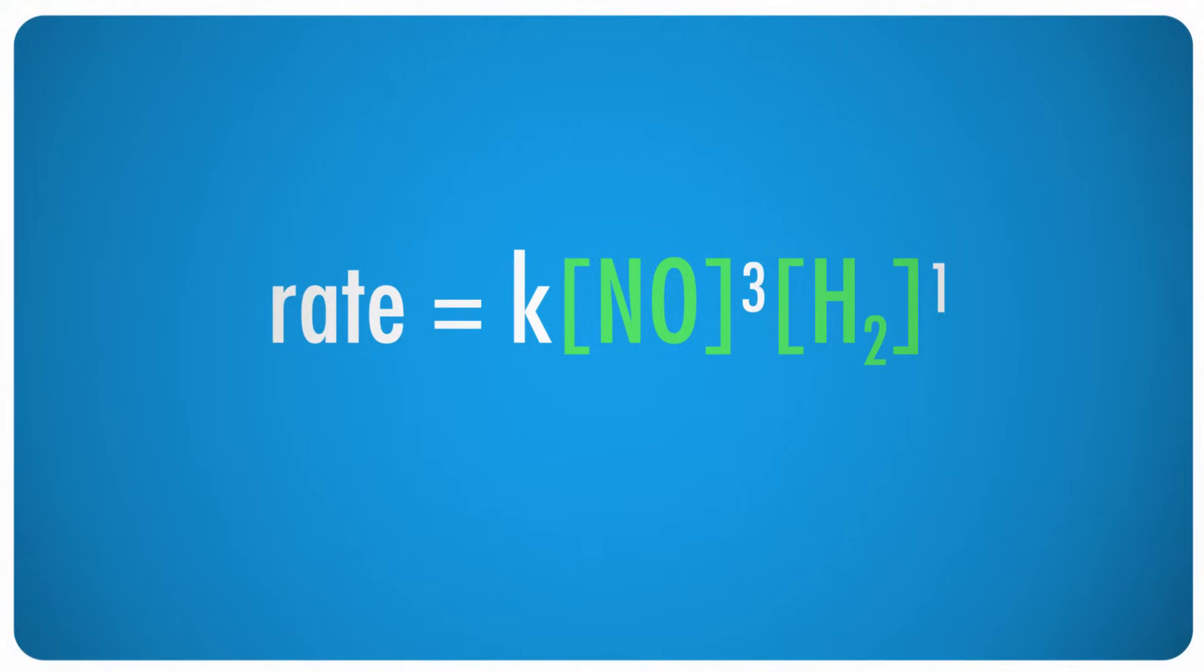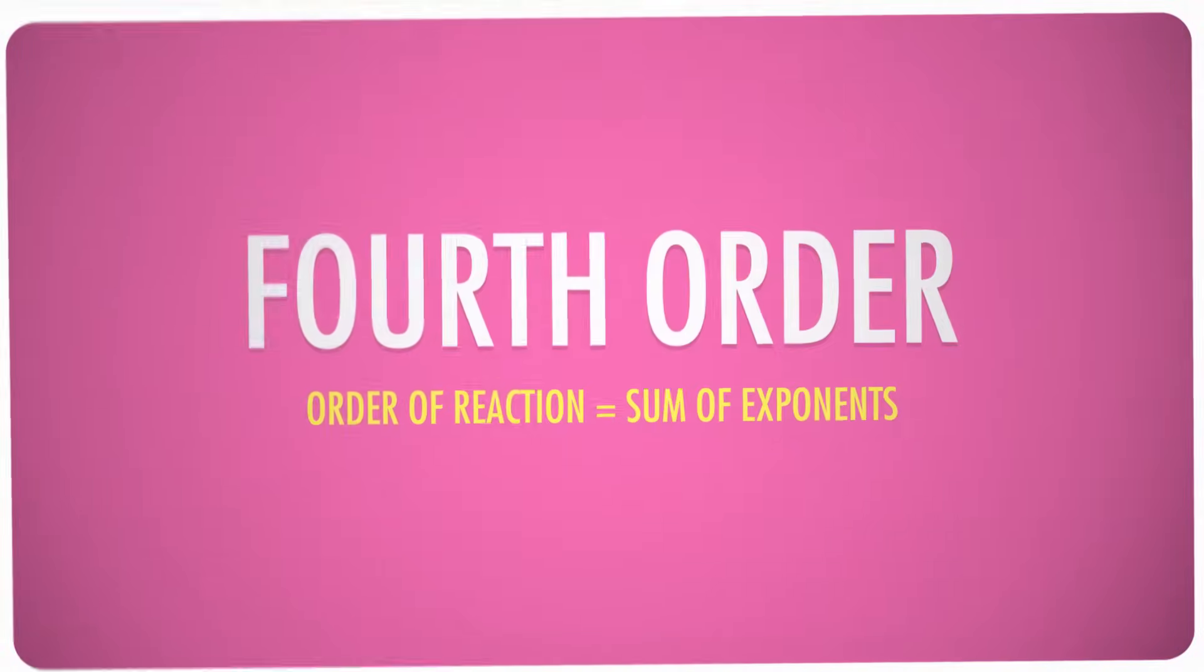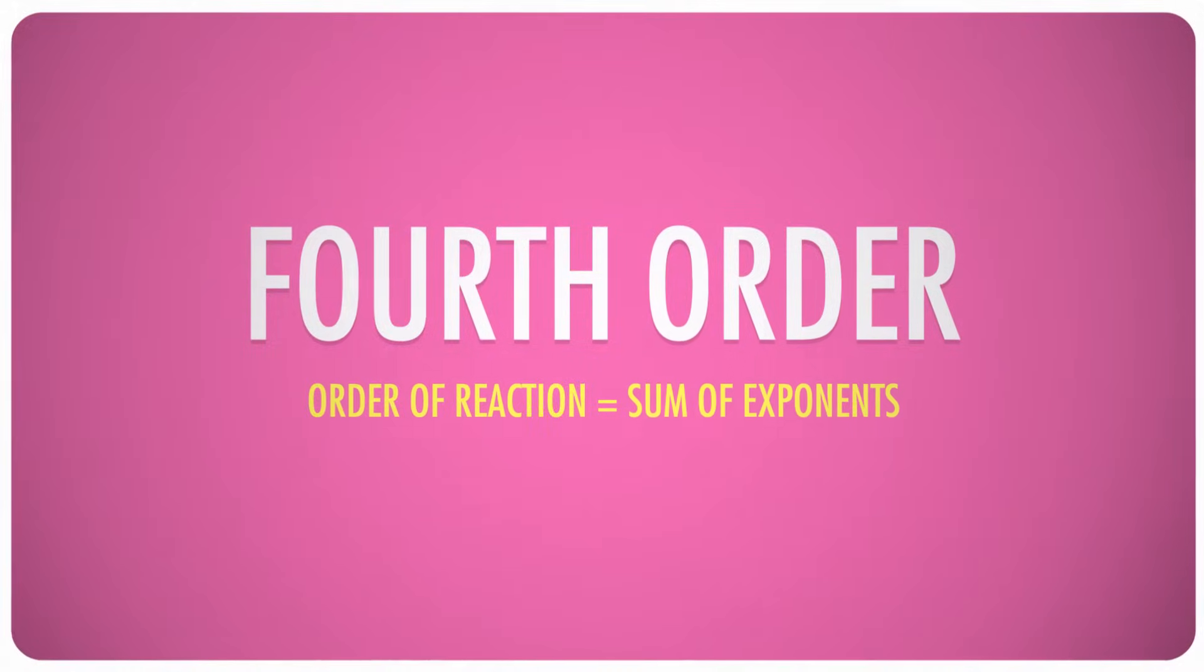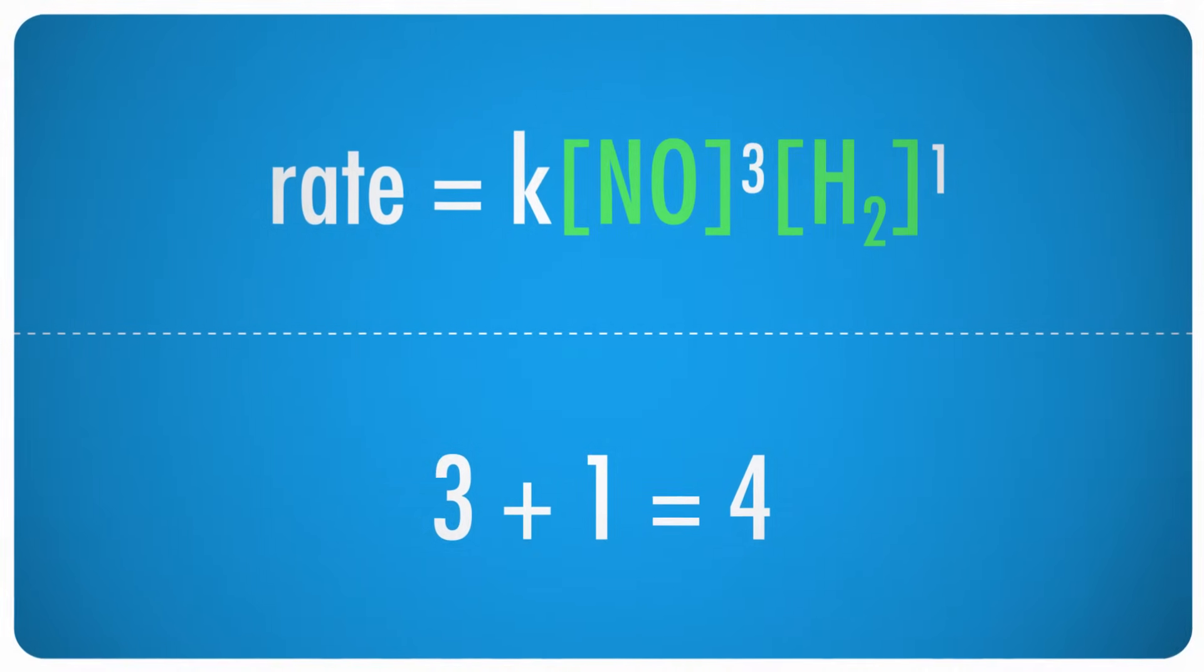This means that the final rate law for this reaction is K times the concentration of hydrogen gas to the first power, you don't need to write out the 1, obviously, times the concentration of nitric oxide cubed. A rate law in this form is said to be of the fourth order. We get that value by adding the exponents together, 3 plus 1. There is some math that isn't hard here. That equals 4. Fourth order reactions are actually quite rare. Most reactions are of the zero, first, or second order, but in all cases, it's calculated exactly as we have done here.